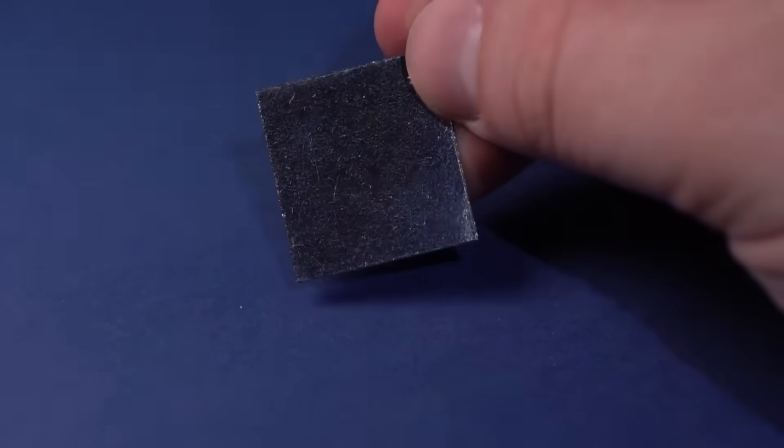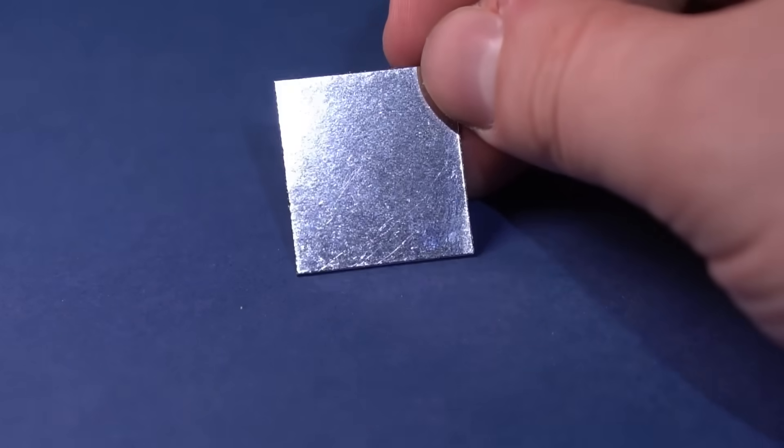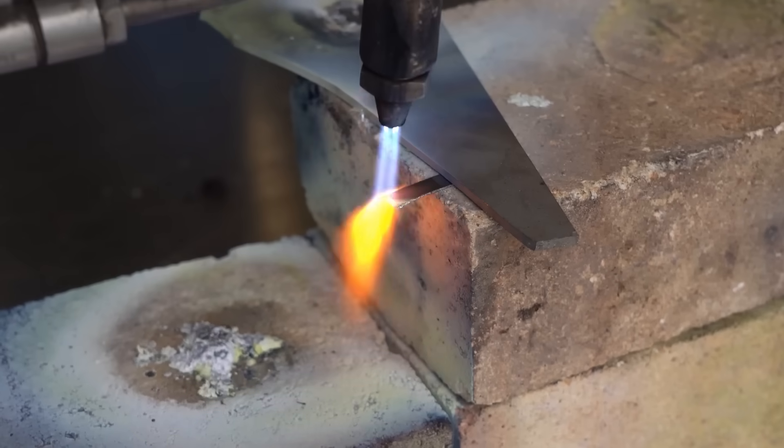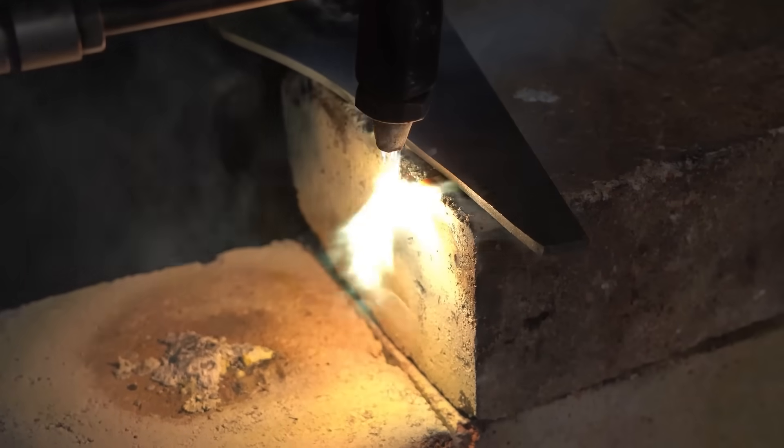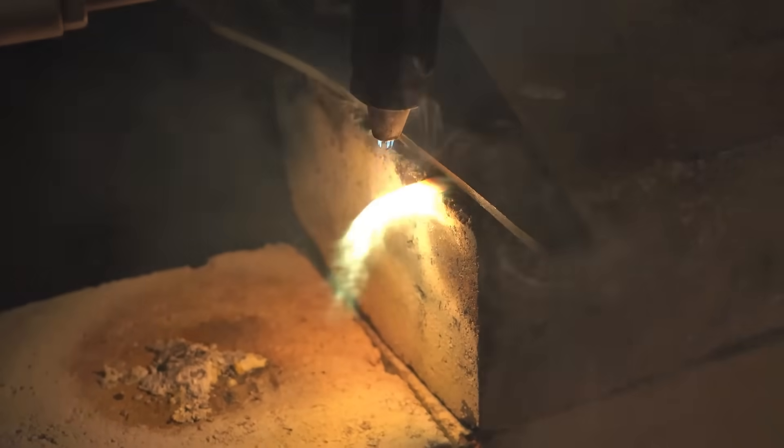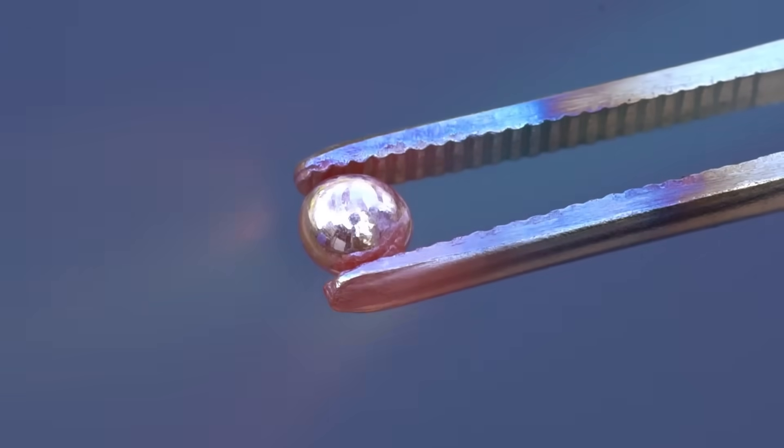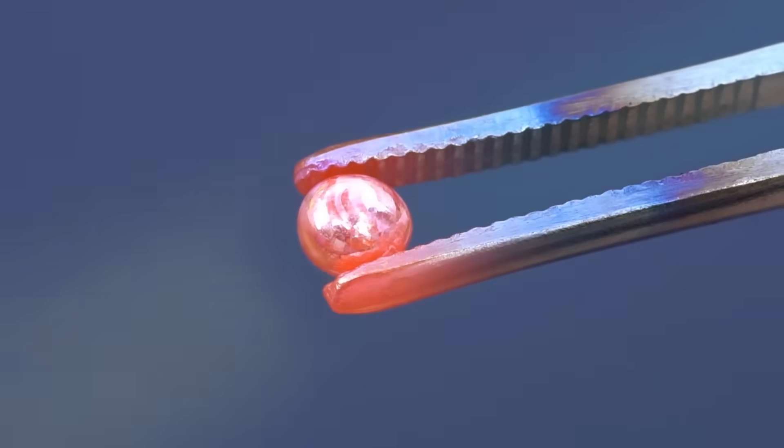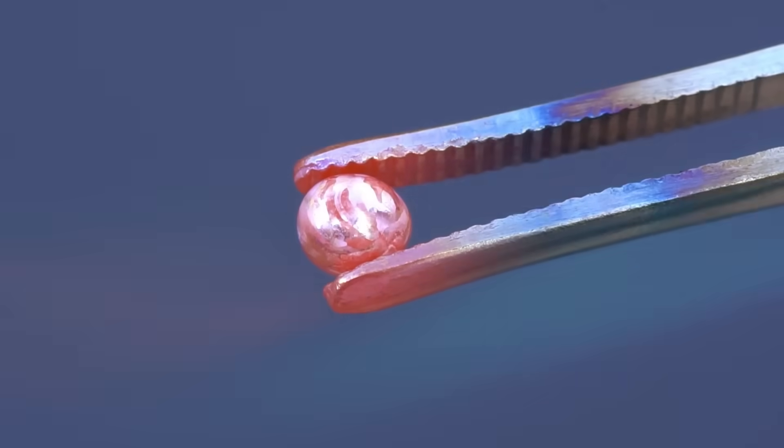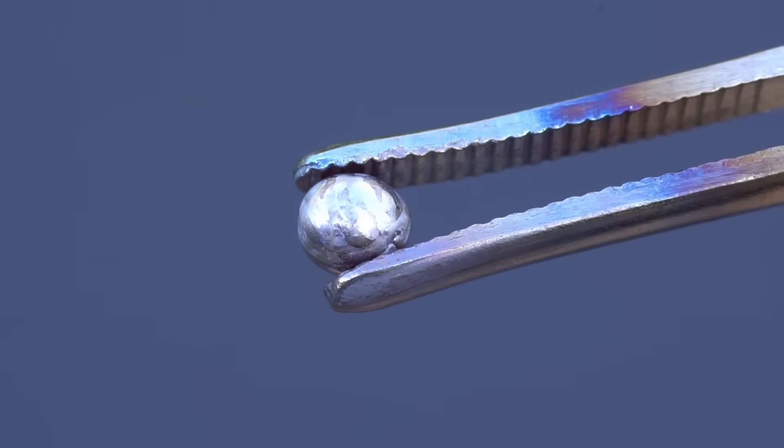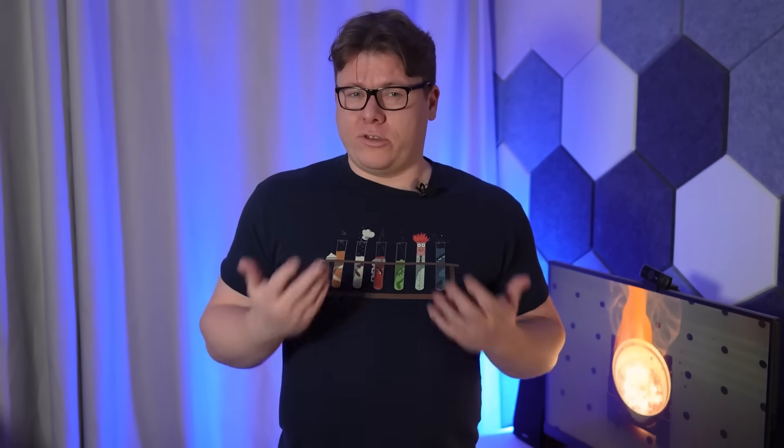Besides osmium, the first four rows of the densest metals also include iridium, platinum, and rhenium, which are extremely expensive, and, like osmium, are inert and refractory metals. These metals don't react much with anything. For example, iridium and platinum don't really tarnish even when heated in the air.